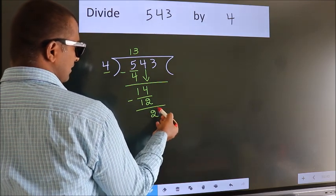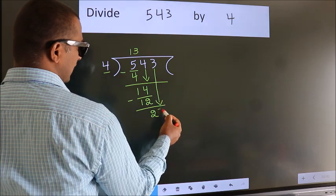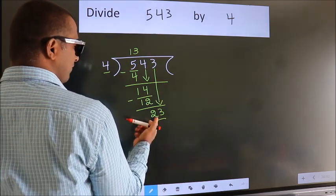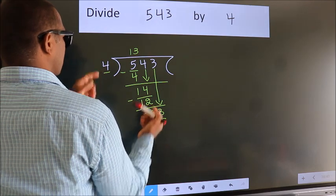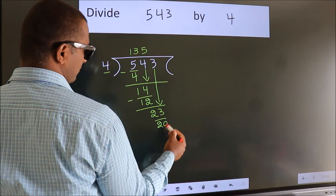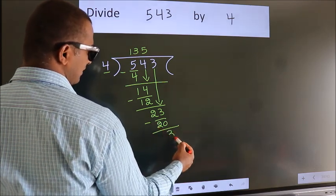After this, bring down the next number. So 3 down, so 23. A number close to 23 in the 4 table is 4 fives, 20. Now we subtract. We get 3.